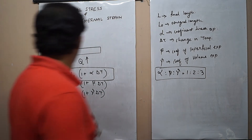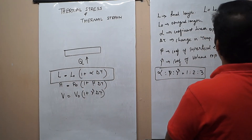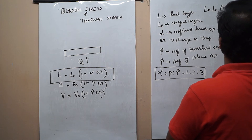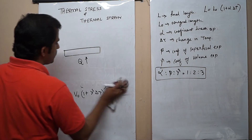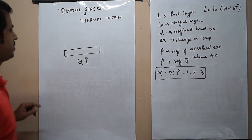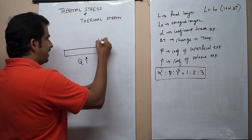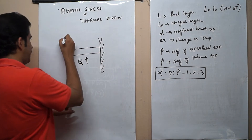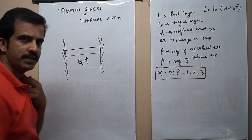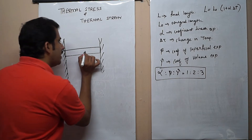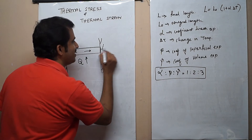For studying this, I will keep this equation here: L = L₀(1 + α·ΔT). Now we will study what is thermal stress and what is thermal strain. Suppose there is a metal bar and its ends are rigidly fixed. Now if we try to apply heat, what will happen? The metal will try to expand.